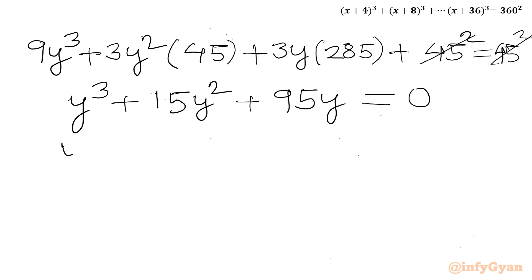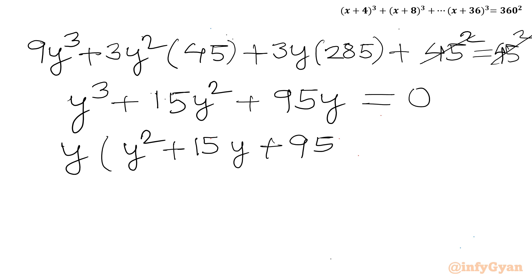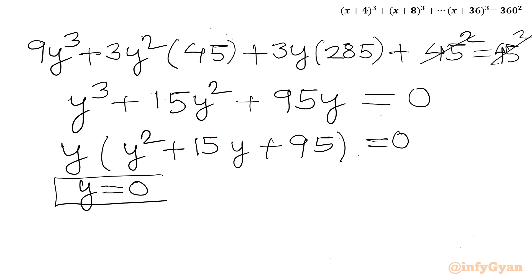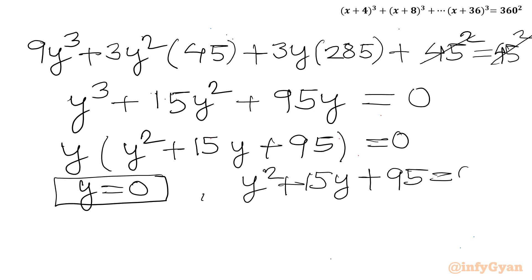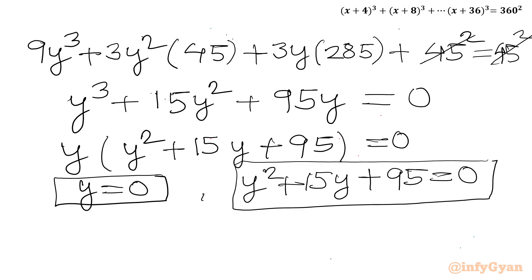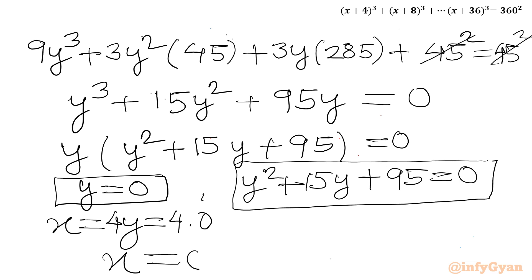Now y is a common factor, so I can write y(y² + 15y + 95) = 0. Either y = 0 or y² + 15y + 95 = 0. Our substitution was x = 4y, so when y = 0, x = 4·0 = 0. Our first solution is x = 0.